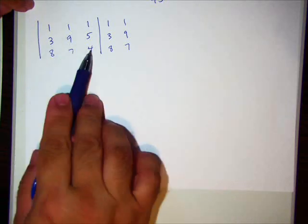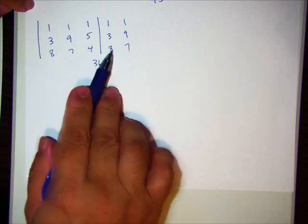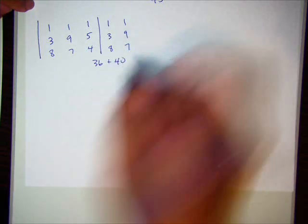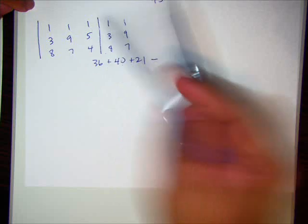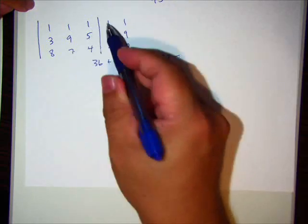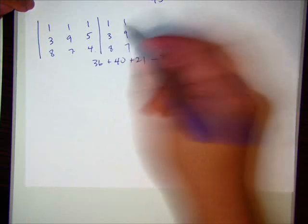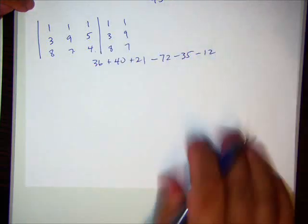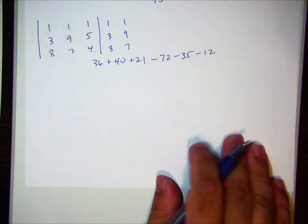1 times 9 times 4, 36 plus 1 times 5 times 8 is 40. 1 times 3 times 7, 21. Now I'm going the other direction. We're subtracting those. 8 times 9 times 1 is 72. 7 times 5 times 1 is 35. 4 times 3 times 1 is 12. Work all that out. And what do we get? Well,